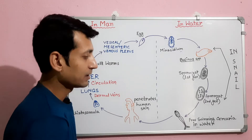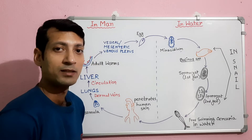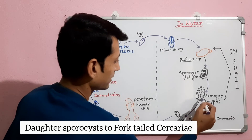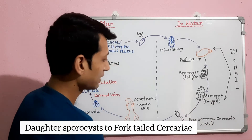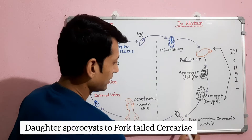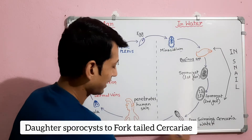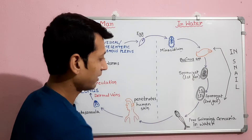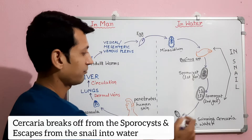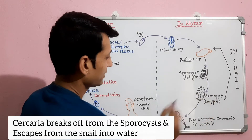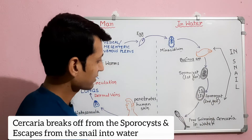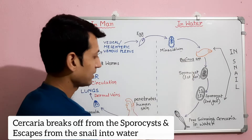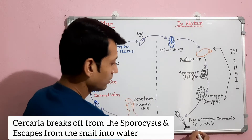Finally, when no further multiplication occurs, the daughter sporocysts give rise to cercaria larvae. The cercaria larvae then break off from the sporocyst stage and escape from the snail into the water.